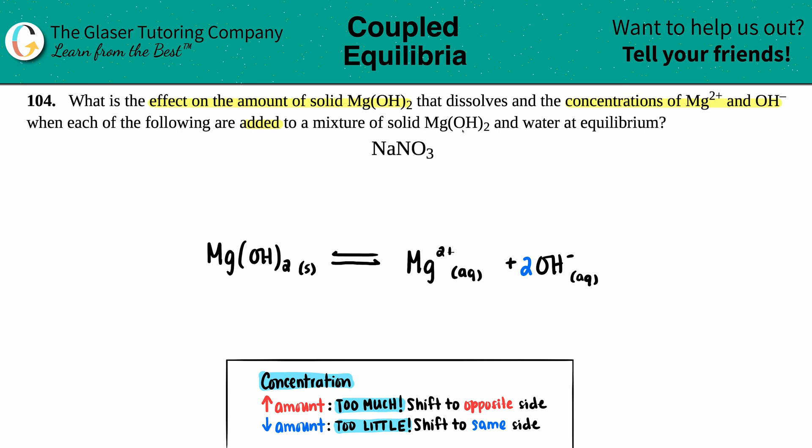NaNO3, this is an ionic salt, right? And remember, all sodium salts, Na, are basically soluble, no exceptions to the rule. So my NaNO3 is going to break down into its two ions, in which case it's going to be Na+ and NO3-.